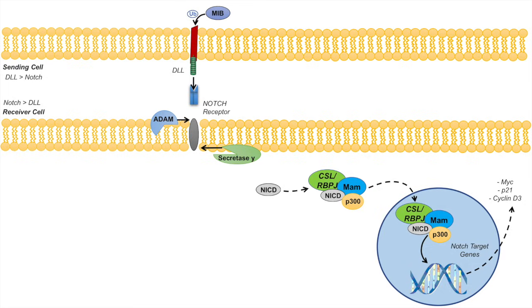Once the notch target genes have been expressed, NICD can be downregulated via an E3 ubiquitin ligase, FBW7, or FBOX and WD repeat domain containing 7. This E3 ubiquitin ligase effectively ubiquitinates the NICD, which can lead to the proteasomal degradation of NICD and effectively shutting this pathway down once the notch target genes have been expressed.